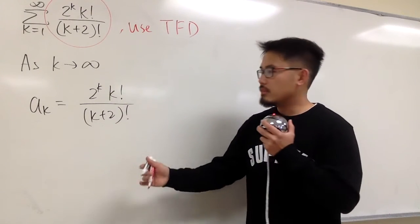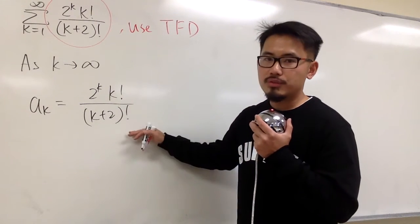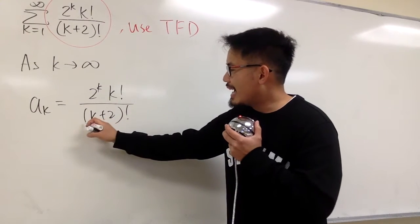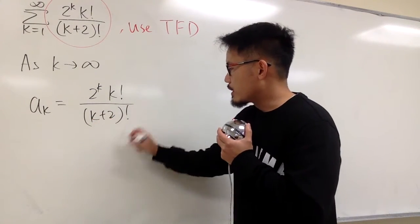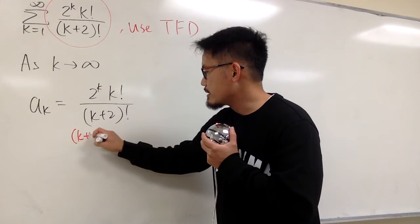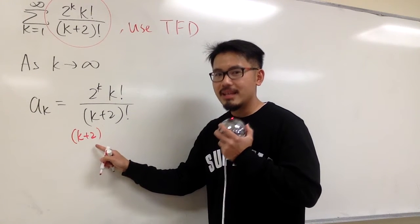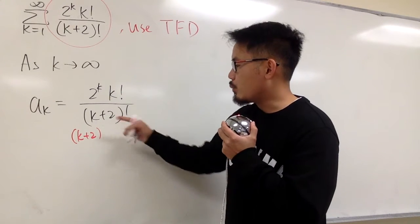And to take this limit, I'm going to simplify the factorials first. To do that, I am going to work out the bigger factorial. k plus 2 factorial is the same as saying k plus 2. We put down whatever we have in the parentheses first. And then, for the next one, I will put down one less, which is going to be k plus 1.